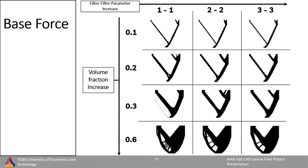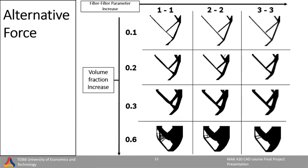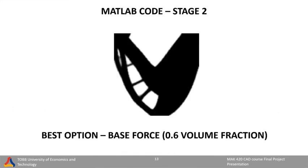By using this mesh value, we made several analyses for each boundary condition. In this slide you can see the analysis for the base force — by changing the filter parameters and volume fractions, we can get different results. We also made analysis for the alternative force conditions, and similarly, by changing the volume fractions and filter parameters we get different results. After this analysis, we picked the 60% volume fraction base force model due to its relatively strong shape.